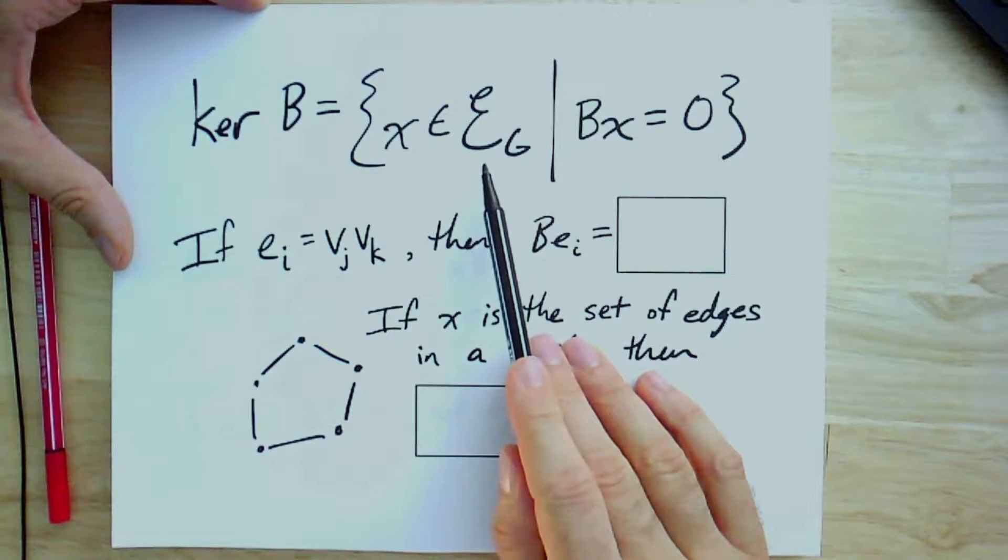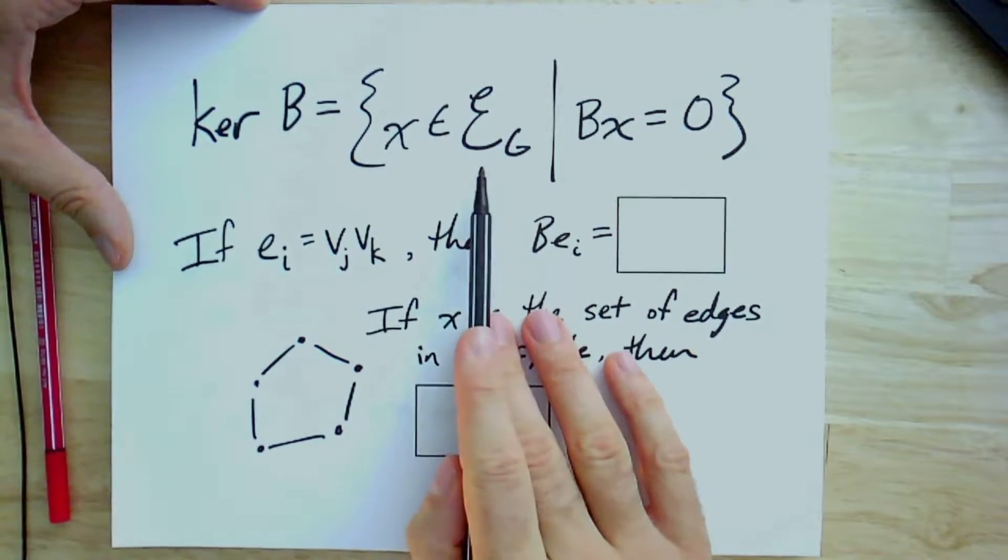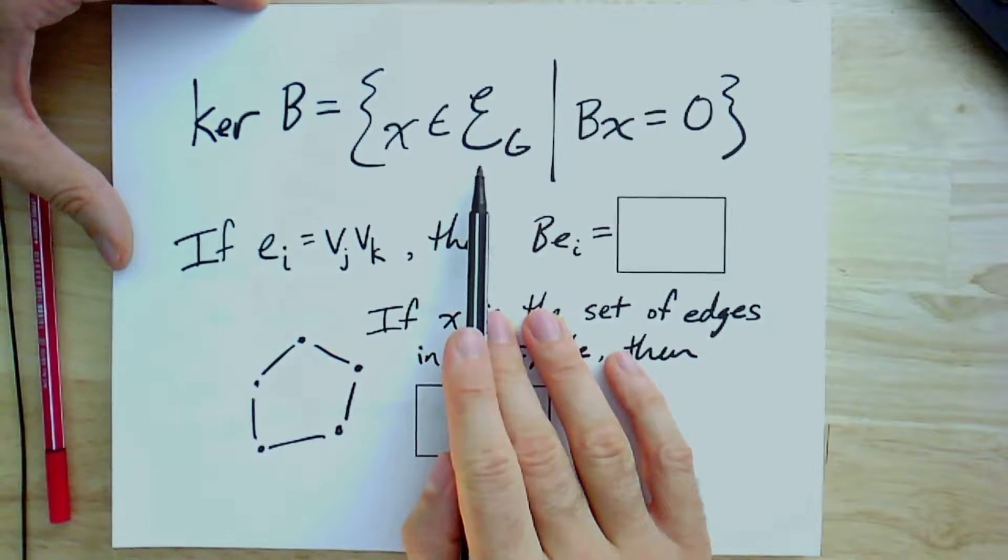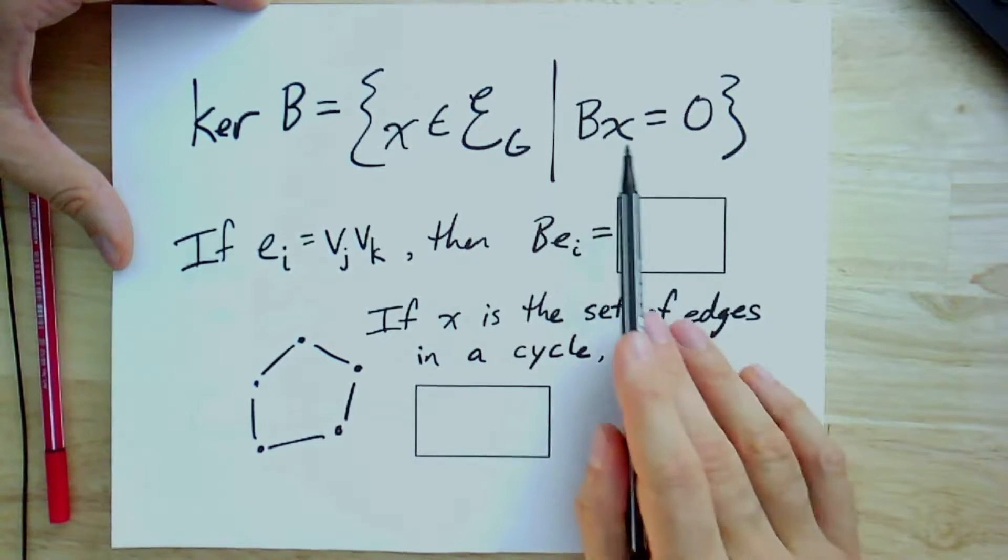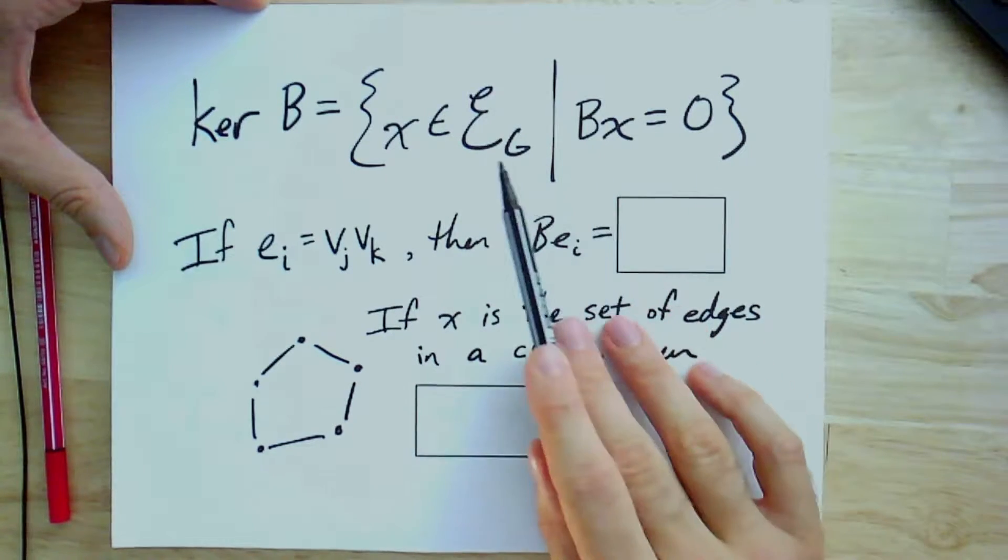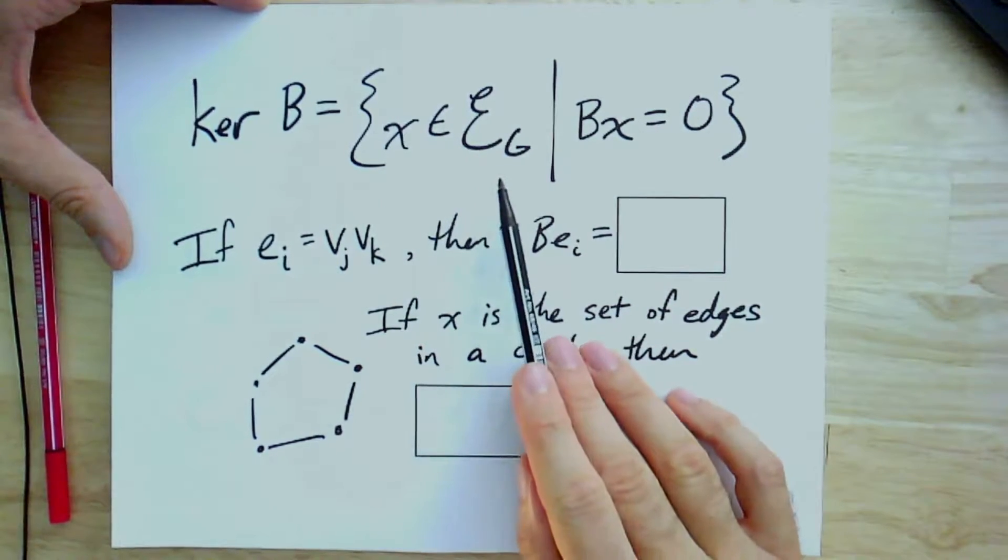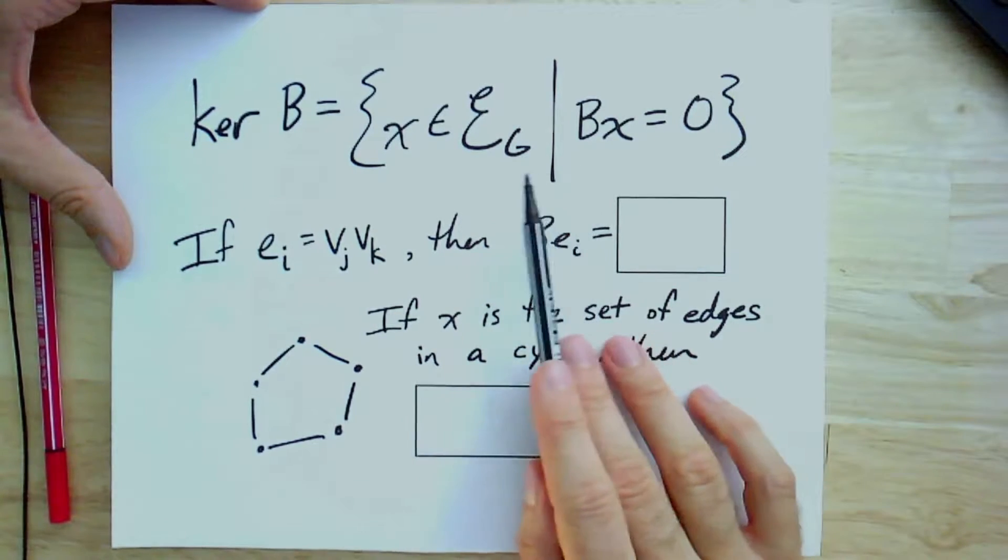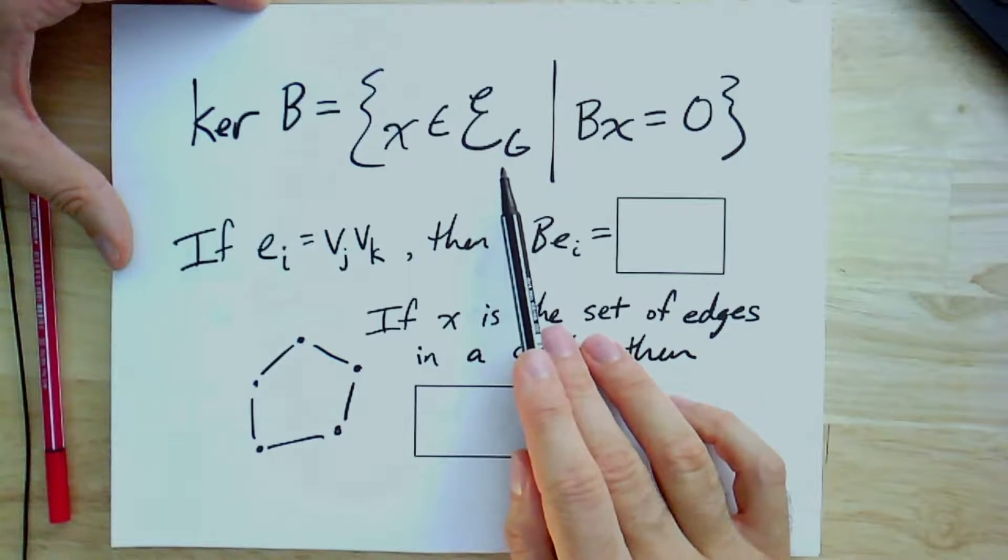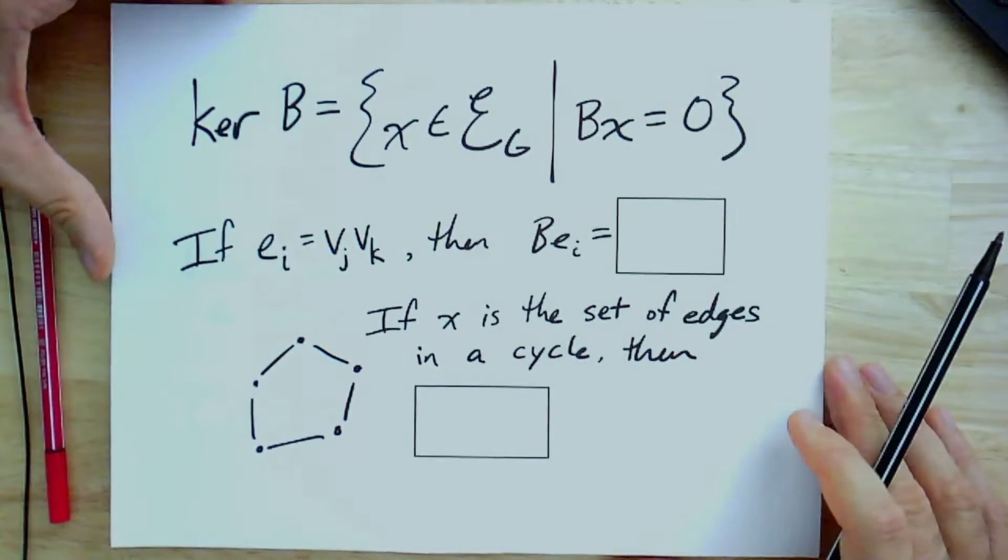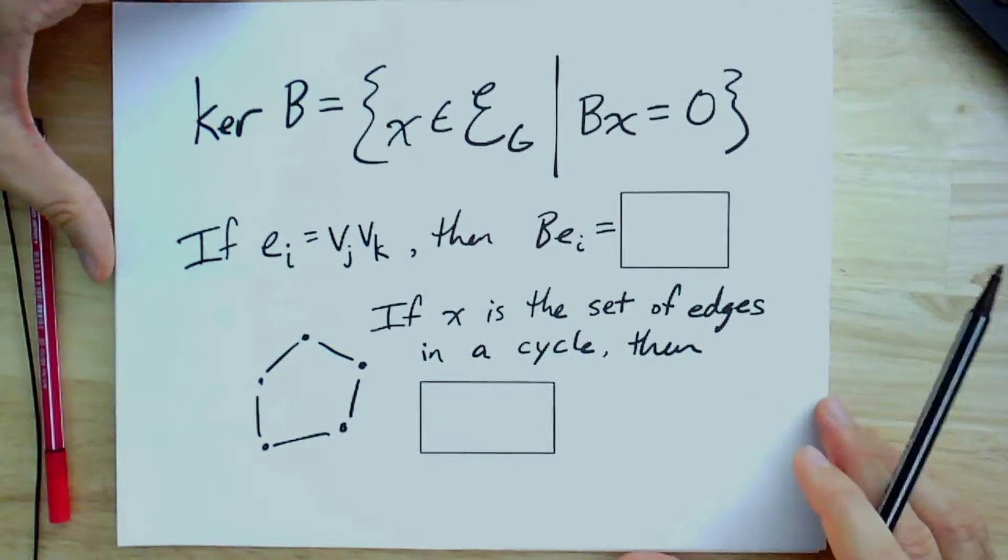So for a given set of edges, it will map to the sum of the ends of all those edges. And so the kernel will be all of those for which the sums of all the ends of all the edges actually cancel all out and end up back at zero. So let's dig in a little closer.